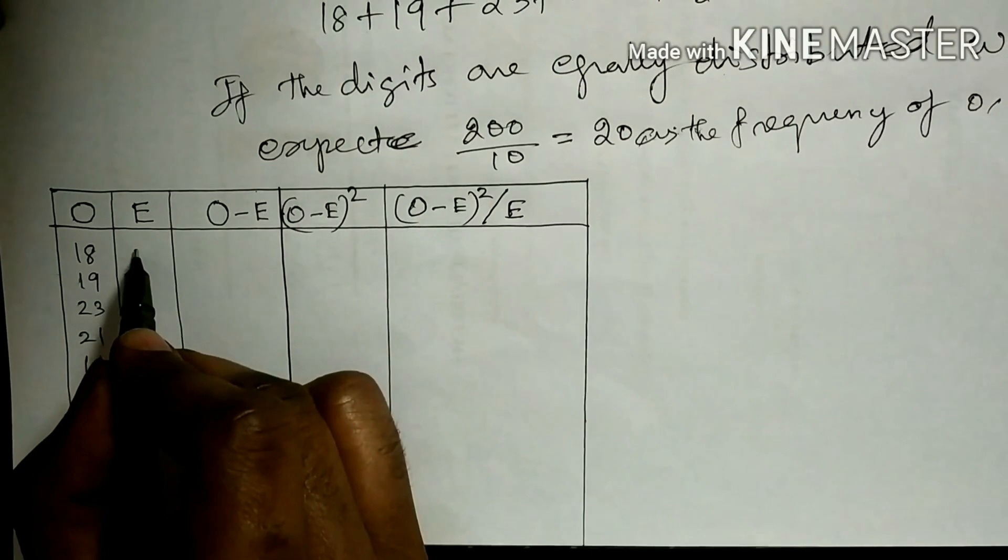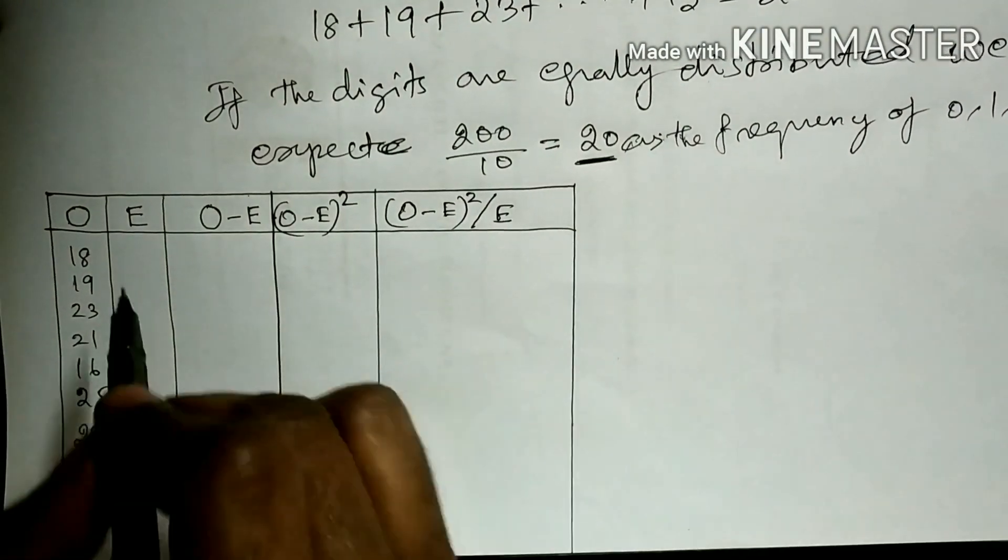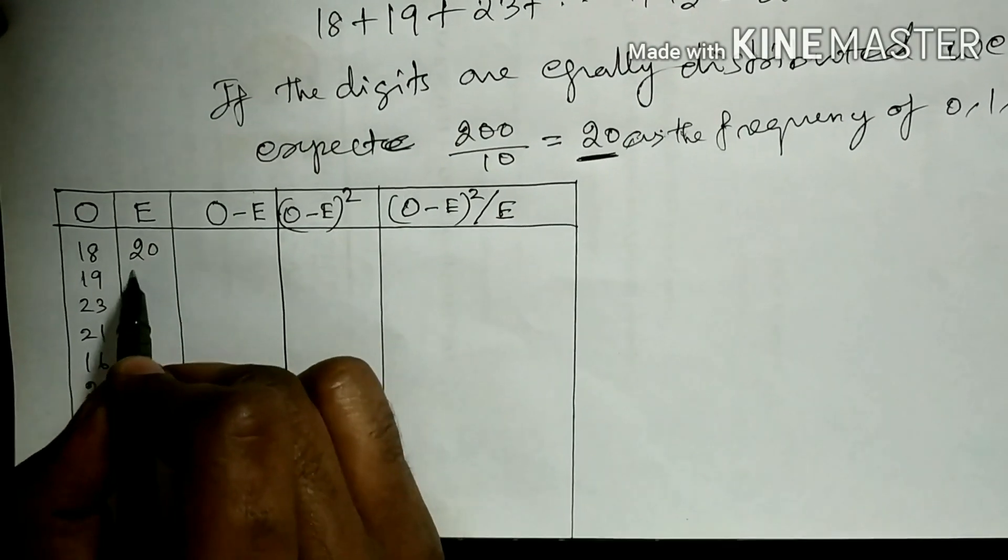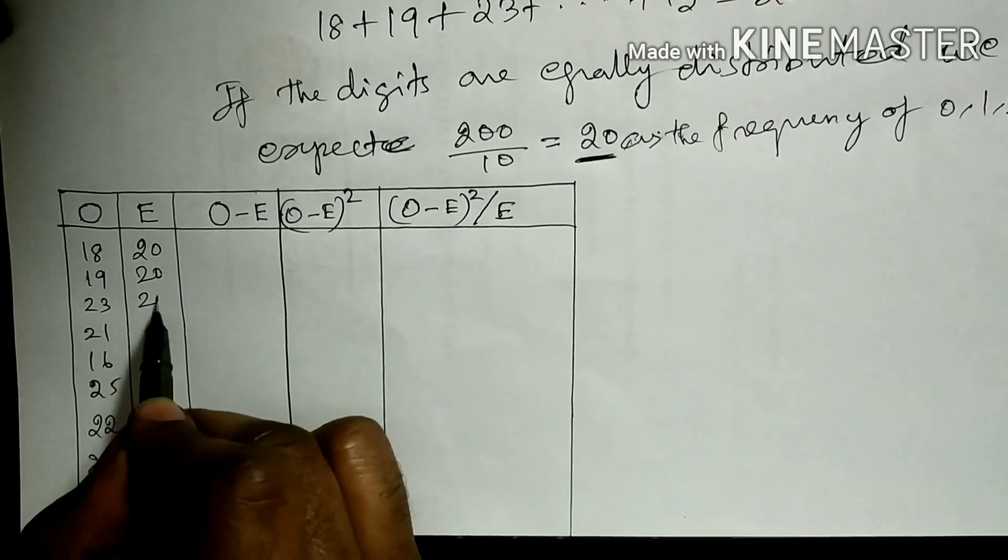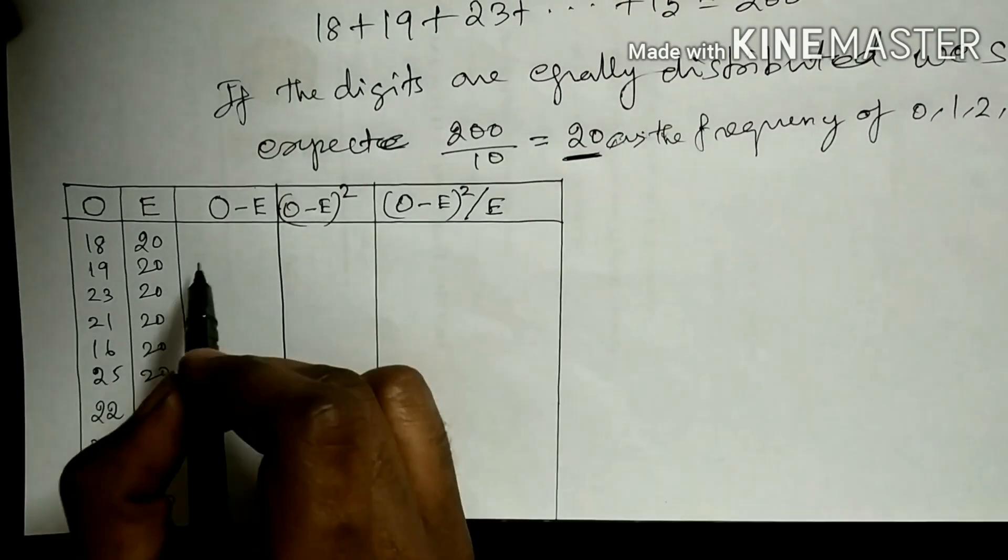Expected frequency is 20 for each row. Just 20, 20, 20, 20, 20, 20, 20.